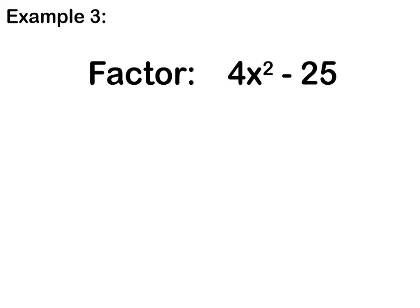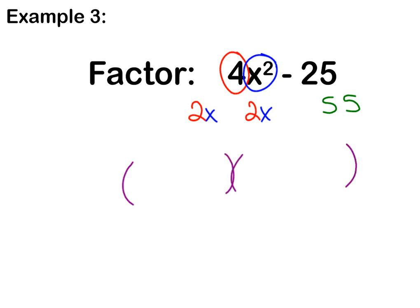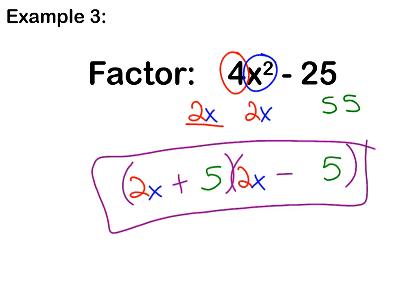Pause the video now as you take a look at example 3. Press play to go over your answer. What's different about this one is you actually have a coefficient in front of x squared. Notice I can also take the square root of 4 and get 2 — so 2 times 2 gives me 4. x times x gives me x squared, and 25 is 5 times 5. When setting up the parentheses, notice this time the first term is 2x, because 2x times 2x is 4x squared. Then we have our 5s in the back, and of course our opposite signs of positive and negative. That's your final answer for example 3.